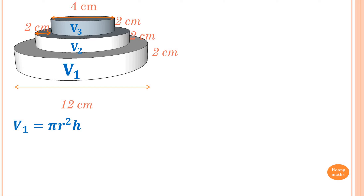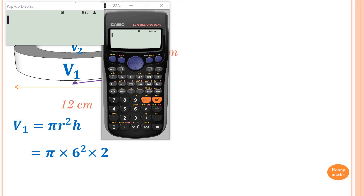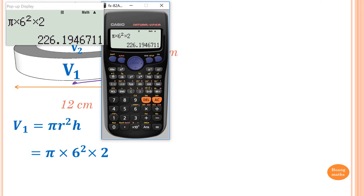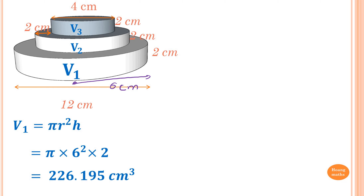Volume V1 equals pi r squared h. The diameter shown is 12 centimeters, so the radius is 6 centimeters. Substituting: pi times 6 squared times 2. I enter shift pi times 6 squared times 2 into the calculator and store the result in memory A, which gives me 226.195 and so on.